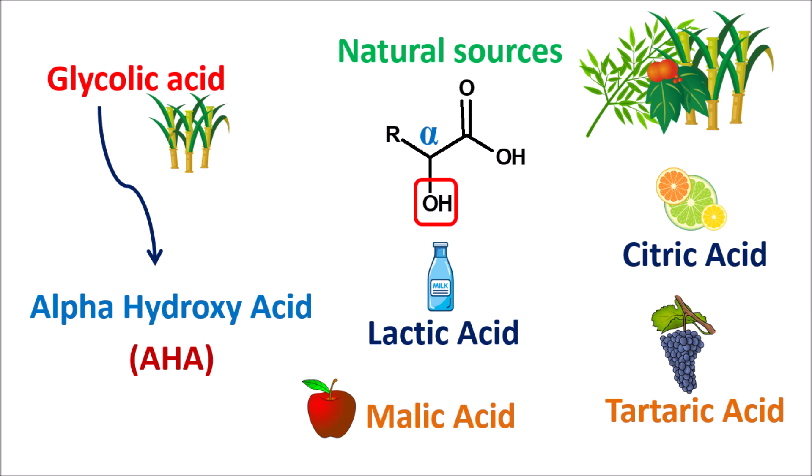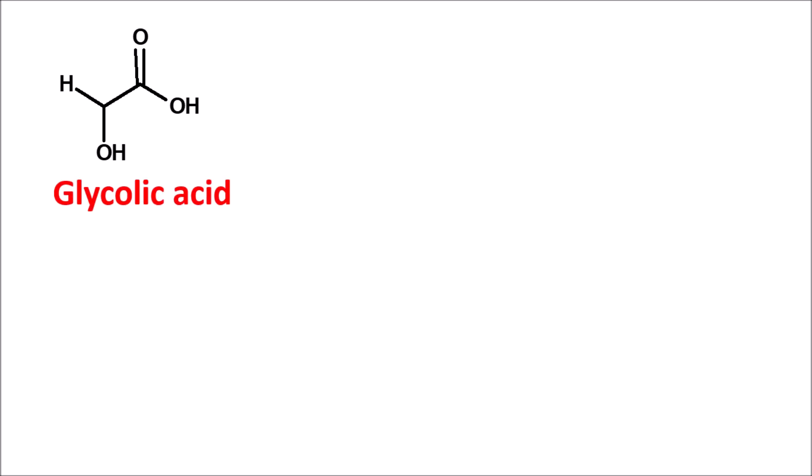All these acidic components can produce exfoliation of the skin and they can also reduce the darkening of the skin. But among them, glycolic acid is one of the most widely used alpha hydroxy acids. Looking at its structure, glycolic acid has a simple alpha carbon with a hydrogen attached, making it the smallest molecule among the alpha hydroxy acids.